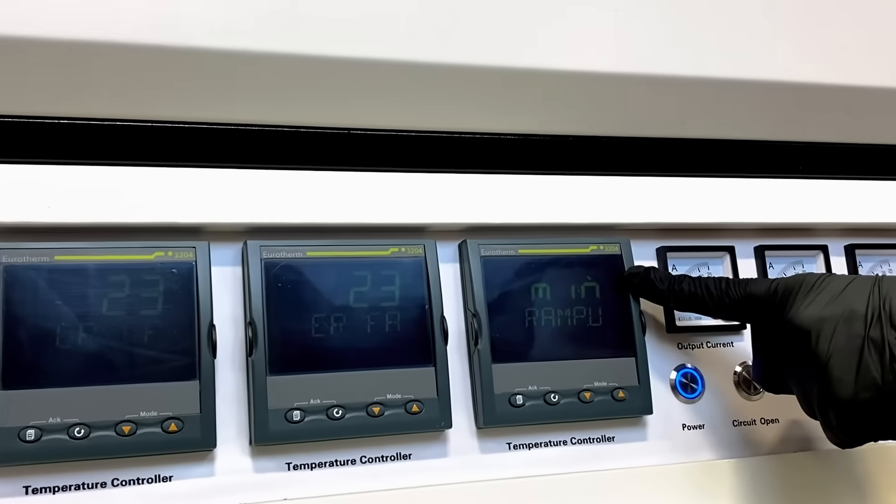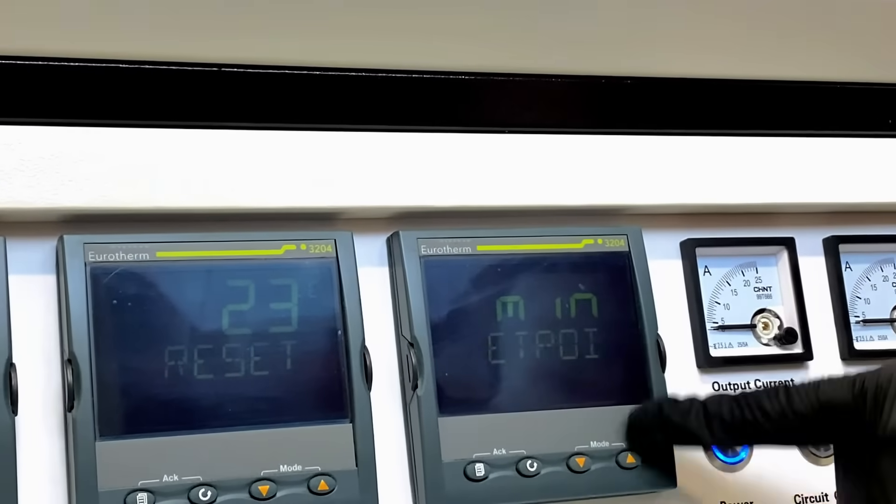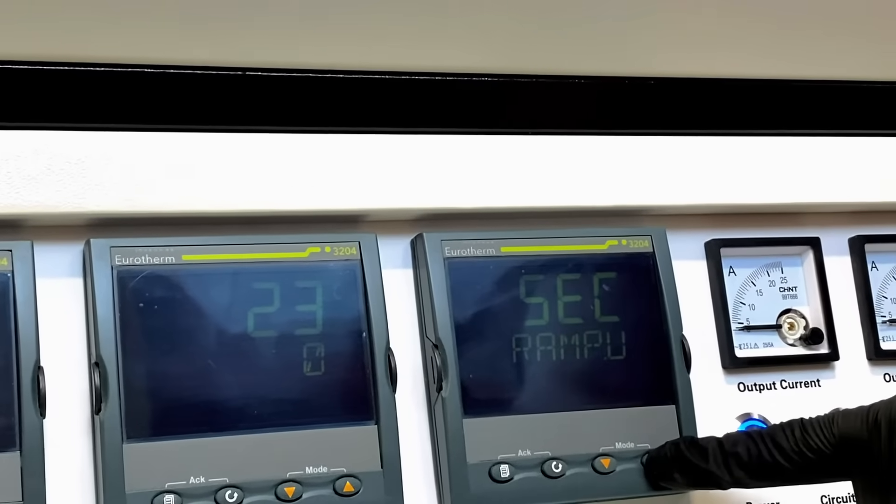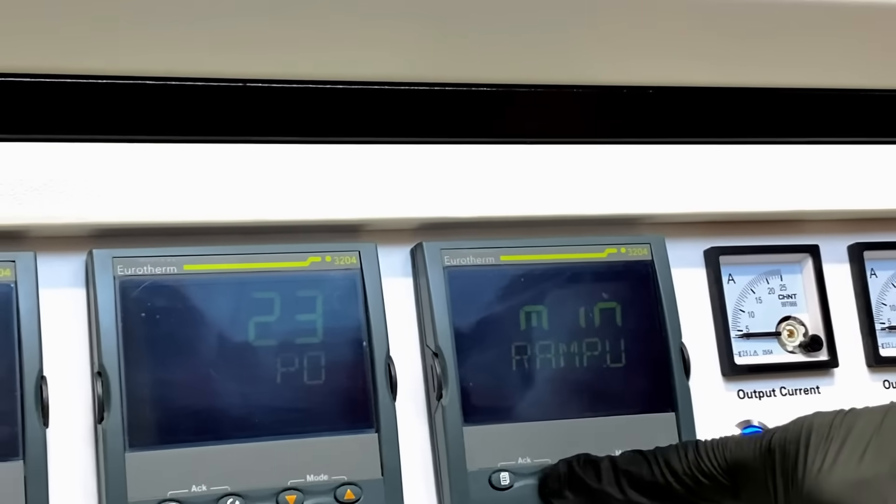This will select the unit of time in which we are going to program our ramp rate or our heating rate to our target temperature. You may select between hours, seconds, and minutes. We're going to select minutes and press the cycle button again.